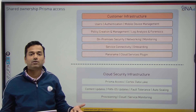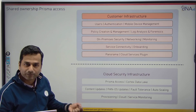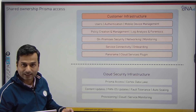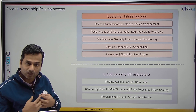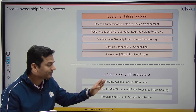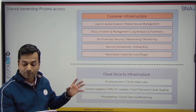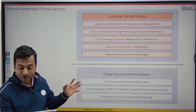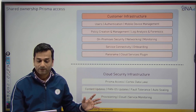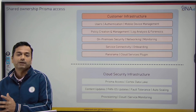What is the role of Palo Alto? The entire Prisma Access management — underlay and overlay — is managed by Palo Alto. Cortex Data Lake: when my Prisma Access nodes generate logs, they are sent to Cortex Data Lake. Palo Alto also handles content updates, PAN-OS updates, fault tolerance, auto-scaling, provisioning, cloud and service monitoring. So this is a shared ownership model — some things are managed by the customer and some by Palo Alto.